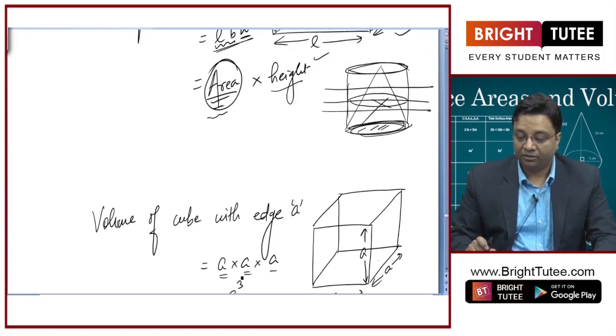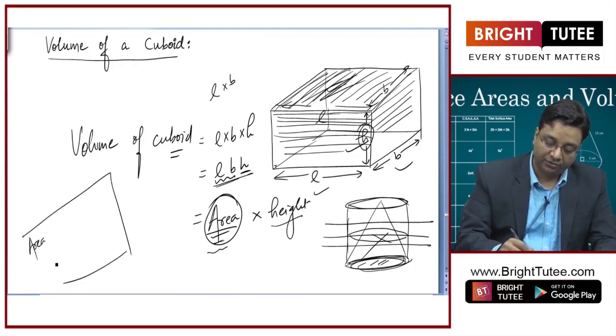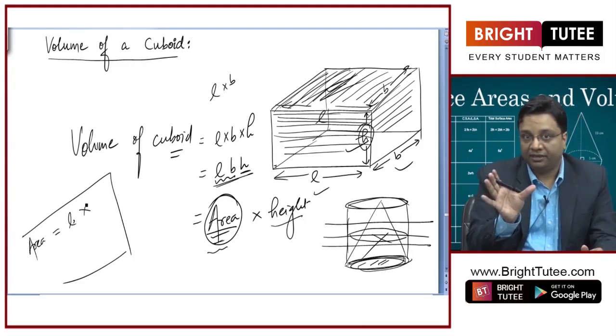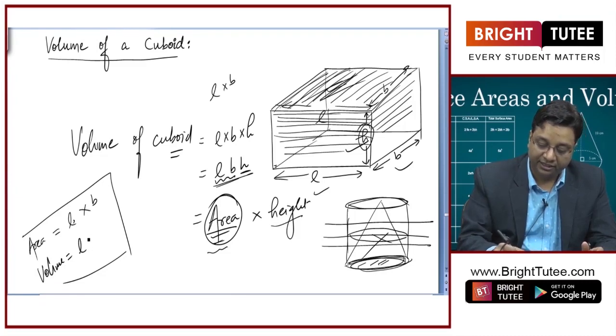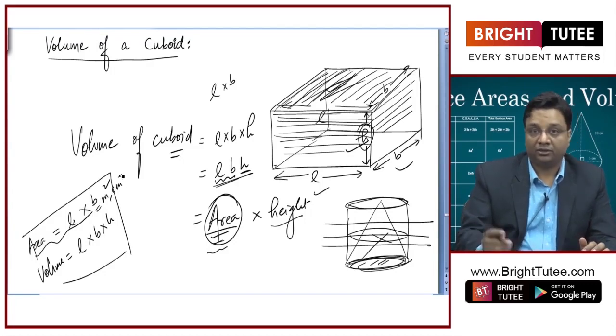Now, you need to keep this in mind that while calculating area, area was a product of two dimensions, two lengths. Length one may be the length itself or the second thing may be breadth. Volume is a product of three lengths. So, the unit of area was meter square or square units, meter square, centimeter square units.